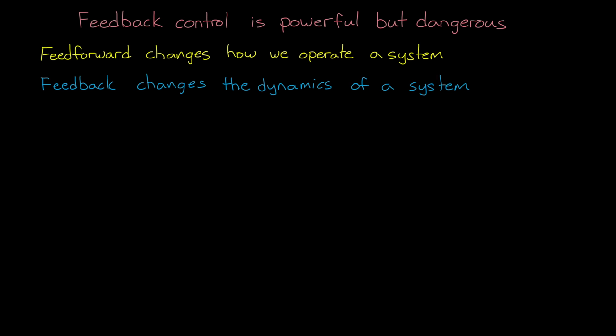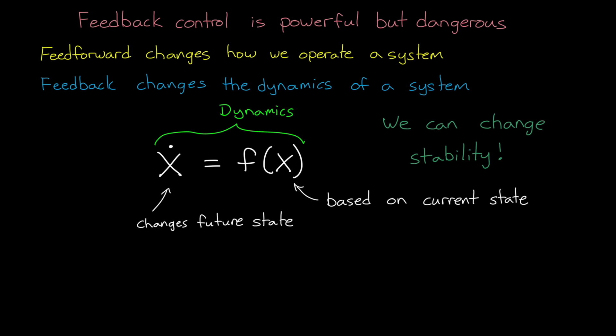It changes its underlying behavior. And this is because with feedback, the controller changes the system state as a function of the current state. And that relationship is producing new dynamics. And changing dynamics means that we have the ability to change the stability of the system.